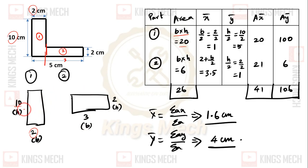Both areas are bh. The first is 2 into 10 equals 20, second is 2 into 3 equals 6. Regarding the center of gravity, consider this as a graph. From the axis, the first section center of gravity distance is h by 2, which is 10 divided by 2 equals 5. Multiplying area 20 into 5 for the first section.